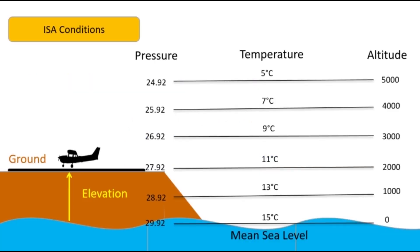Under ISA conditions, at mean sea level, pressure is taken as 29.92 inches of mercury and temperature as 15 degrees Celsius. With every increase in altitude of 1,000 feet, pressure decreases by one inch of mercury and temperature decreases by two degrees Celsius. If an airport is located at 2,000 feet above mean sea level, under ISA conditions the atmospheric pressure would be 27.92 inches of mercury and temperature 11 degrees Celsius. Under standard conditions, density altitude and pressure altitude are the same as the actual altitude.